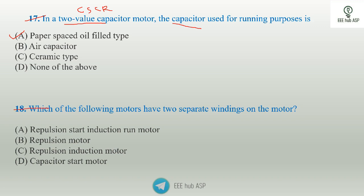Question 18: which of the following motors has two separate windings on the stator? The repulsion induction motor has stator windings and rotor windings with a commutator. The squirrel cage repulsion motor also applies. Option C is the answer.